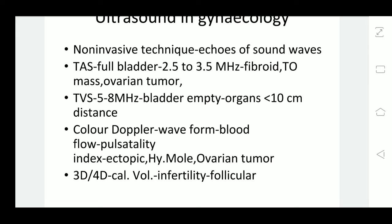For transvaginal ultrasound, the bladder needs to be empty. The sound waves used are 5 to 8 megahertz, and organs within 10 centimeters close distance are nicely visualized. The color Doppler creates an image in wave form, and this is very useful to assess the blood flow in certain vessels.